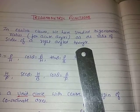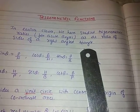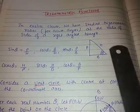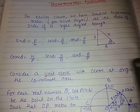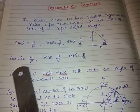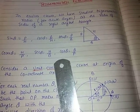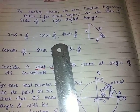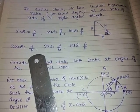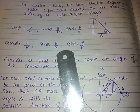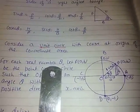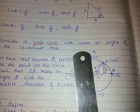In earlier classes we have studied trigonometric ratios for acute angles as the ratio of sides of a right angle triangle. This is your right angle triangle — perpendicular, base, and hypotenuse. You already know sin theta, cos theta, tan theta, cosec theta, sec theta, and cot theta. The six trigonometric functions are: sin θ = P/H, cos θ = B/H, tan θ = P/B, cosec θ = H/P, sec θ = H/B, and cot θ = B/P.